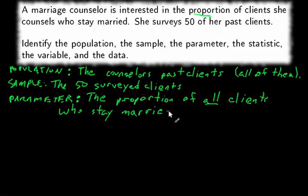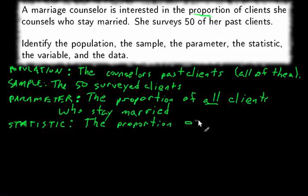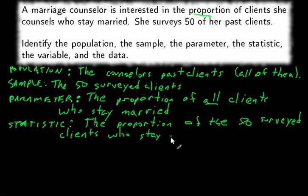The difference between the parameter and the statistic is that the parameter is in regard to the population and the statistic is in regard to the sample — same thing, just from a different set. So the statistic is the proportion of the 50 surveyed clients who stay married.